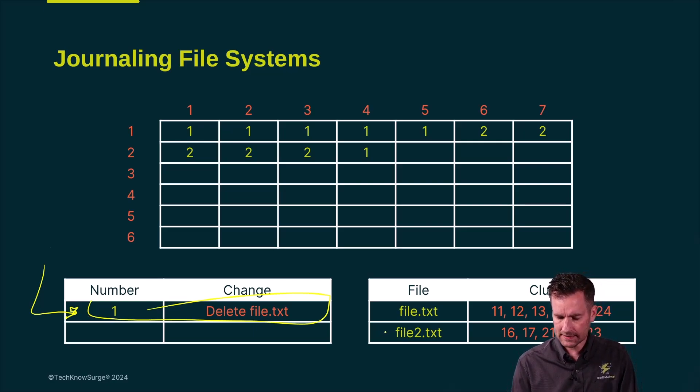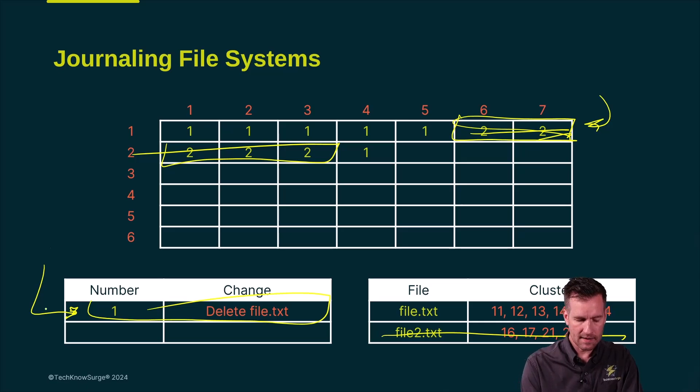Then we go through the process of deleting it from the file allocation table and then we delete it or remove it. We mark it as being available where our data is at and then we mark this as being done. We can put a check mark next to it.